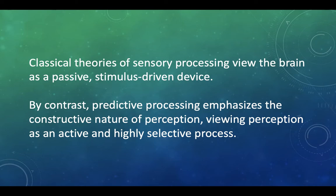So what is it up against? What is this theory where we're generating these different models? Although it's a slight caricature, the classical theories of sensory processing view the brain as passive and stimulus driven. By contrast, predictive processing emphasizes the constructive nature of perception and views perception as an active and highly selective process.